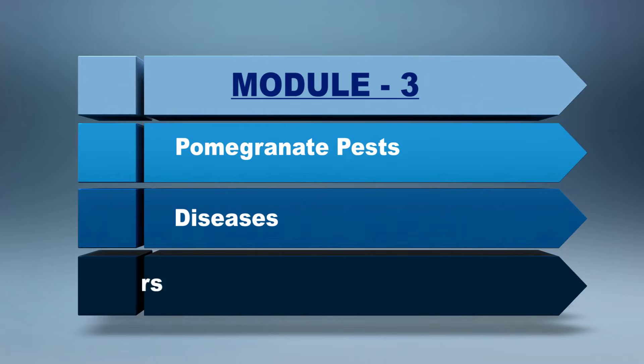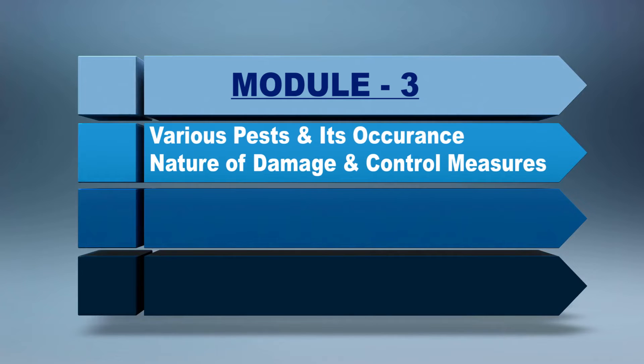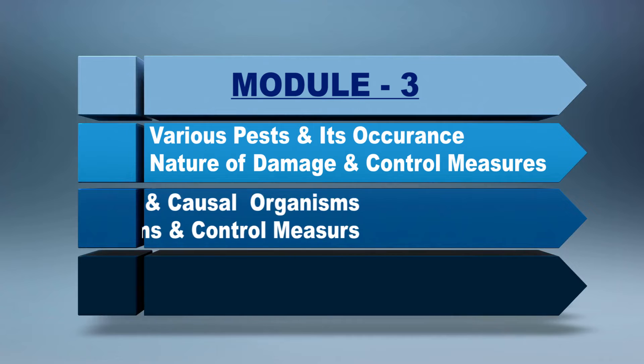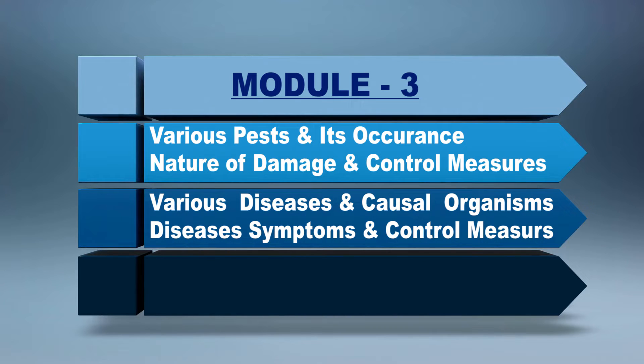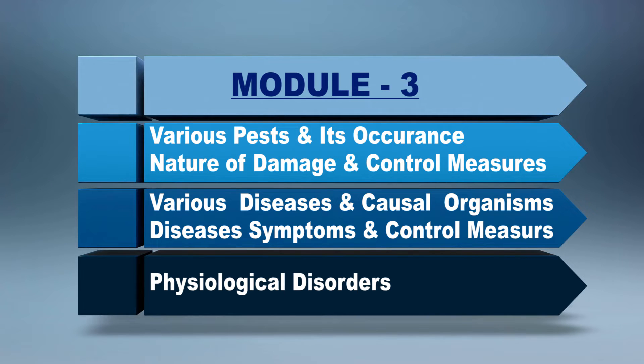The third module is devoted to pests, diseases, and disorders of pomegranate. It will discuss detailed information about the occurrence of major pests, their nature of damage, and control measures. In addition, various diseases, their causes, symptoms, control measures, as well as disorders will be studied in this module.